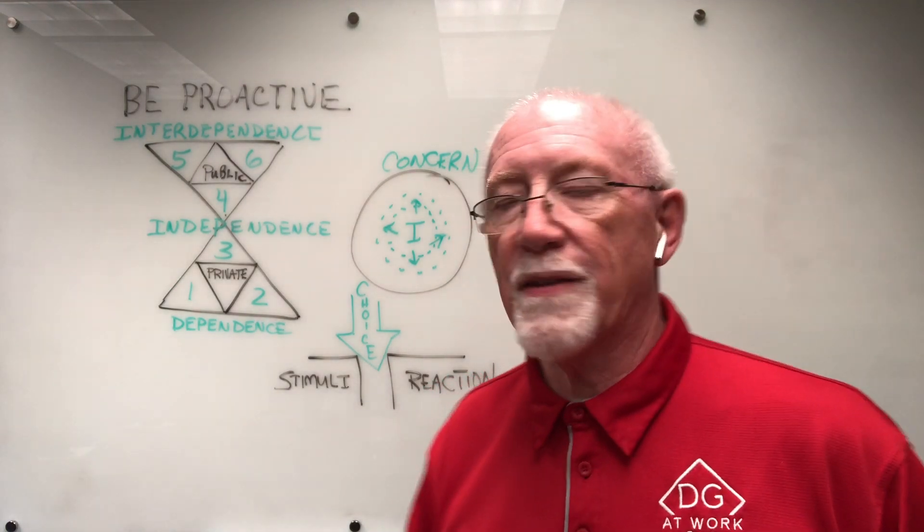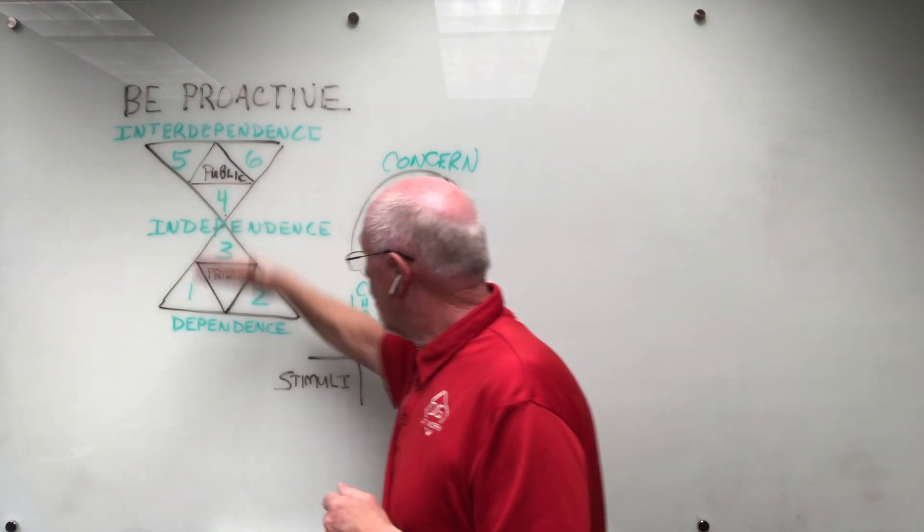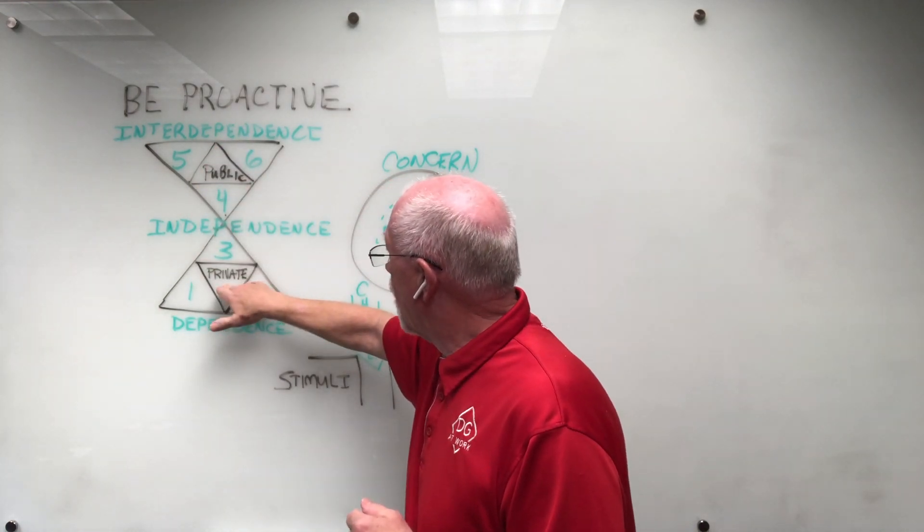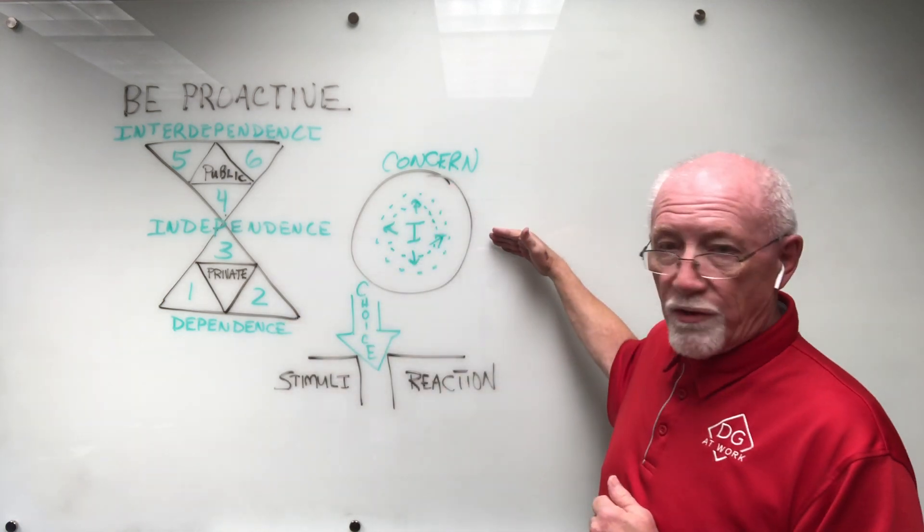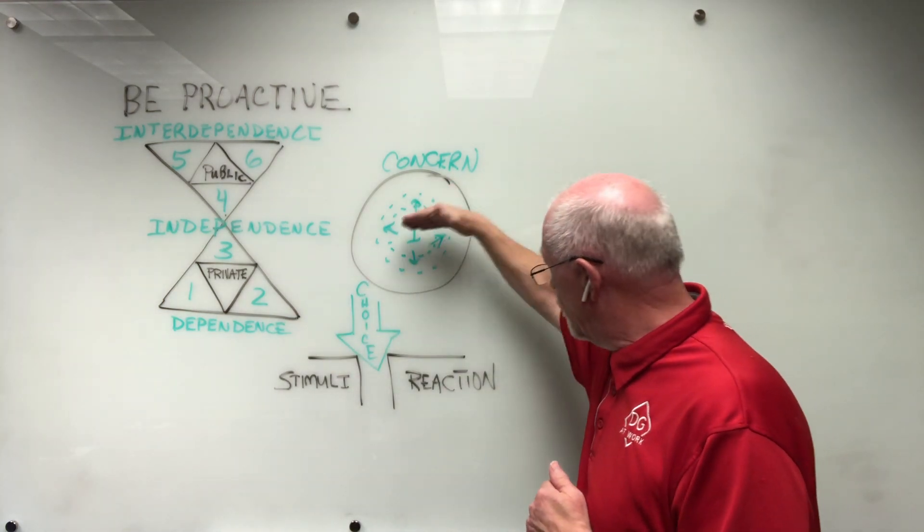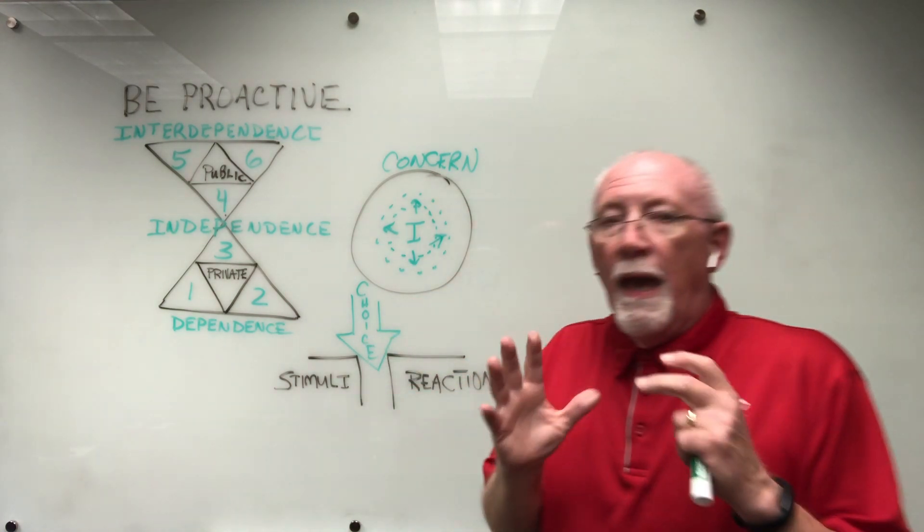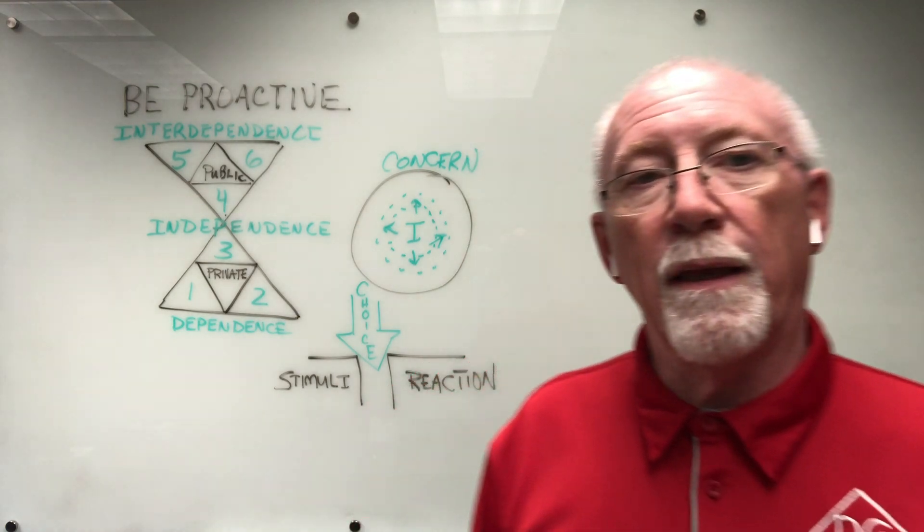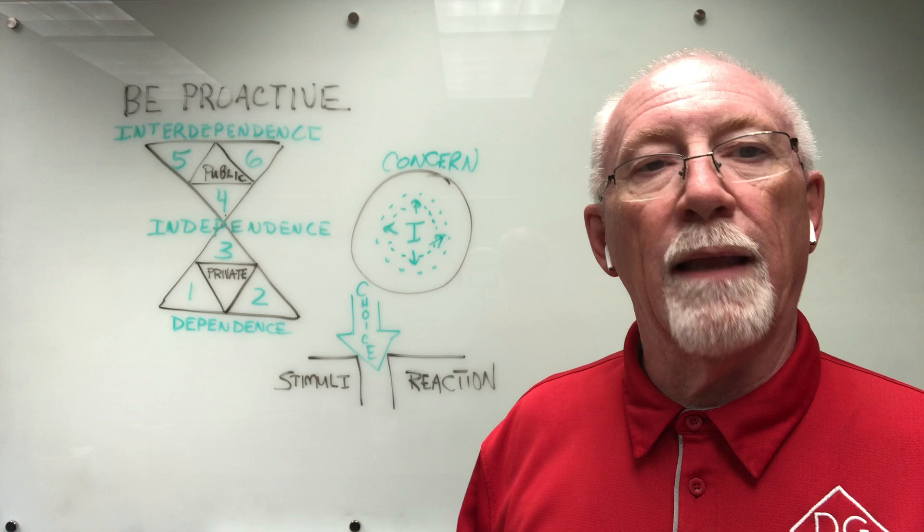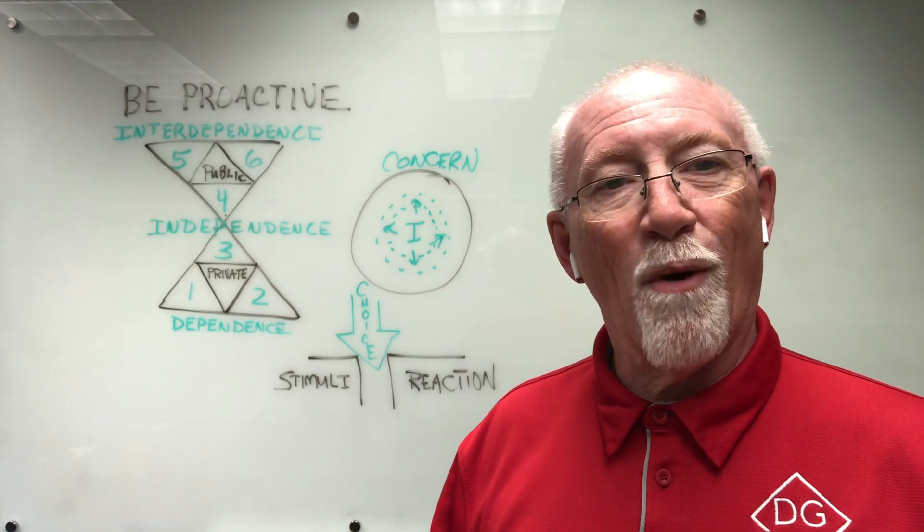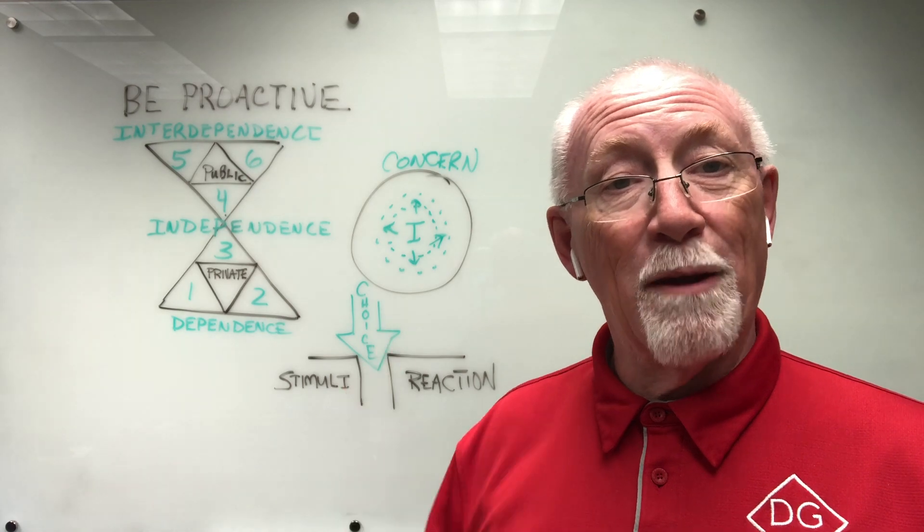In summing this up, he says that habit one is be proactive. You're dependent, you're working in the private, inside you, and you're learning to exercise your influence over that which you can control. You're choosing to respond to all the many things, and because you're limiting your ability to respond and focusing tightly, you naturally become more effective. Well, that's a lot to think about in habit number one.